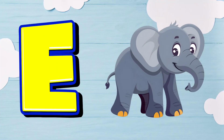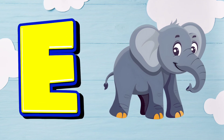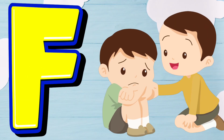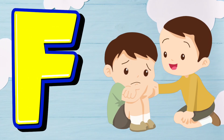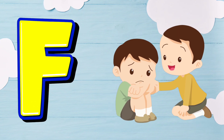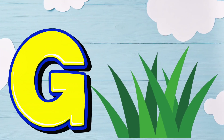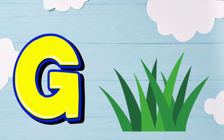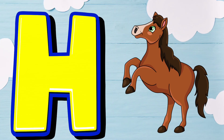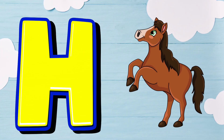E is for Elephant. E. Elephant. F is for Friend. F. Friend. G is for Grass. G. Grass. H is for Horse. H. Horse.